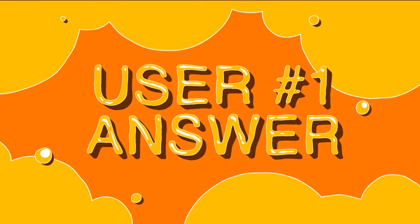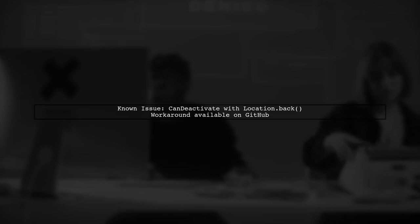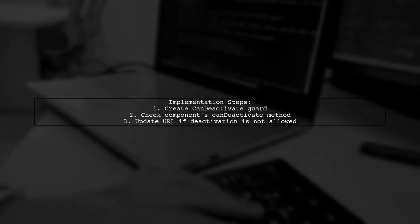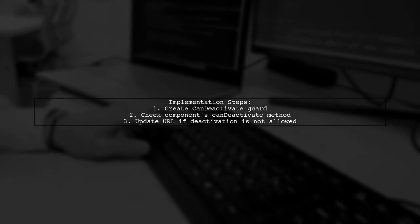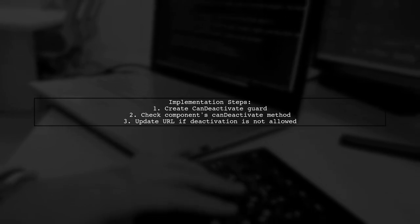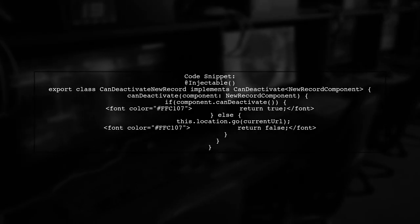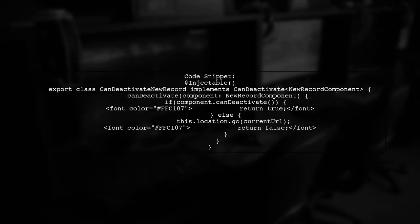Let's now look at a user-suggested answer. A user shares a workaround for the CanDeactivate issue in Angular when using location.back. They mention it's a known problem that hasn't been fixed yet. The suggested implementation involves creating a CanDeactivate guard that checks if the component can deactivate. If not, it retrieves the current route and updates the URL using the router to create a URL tree and the location service to update the URL.